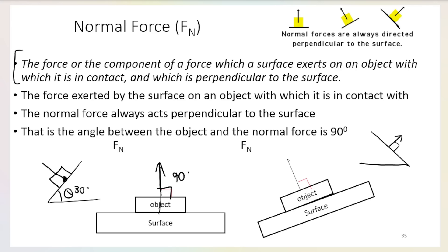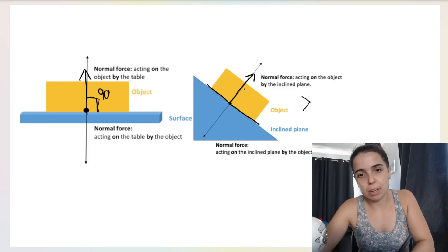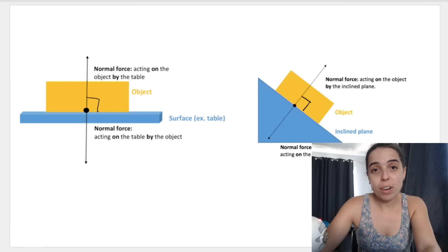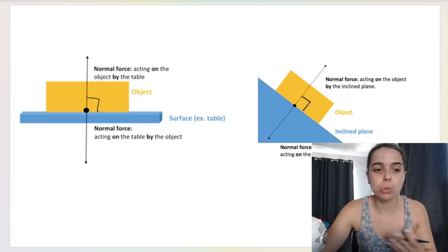If I have a surface angled at 30 degrees with an object on the slope, the normal force is not straight upwards. It acts at 90 degrees relative to the surface — so it tilts with the surface. The angle between the normal force and the surface must always stay 90 degrees. When your surface tilts, your normal force tilts as well.